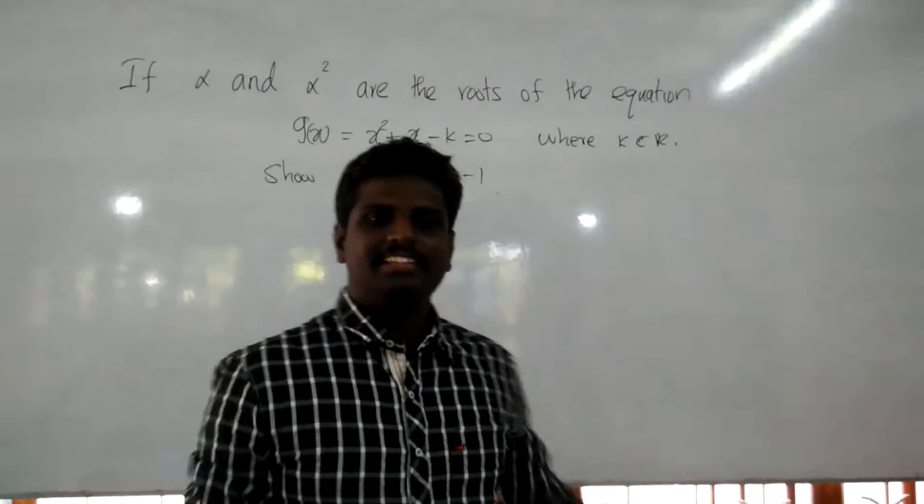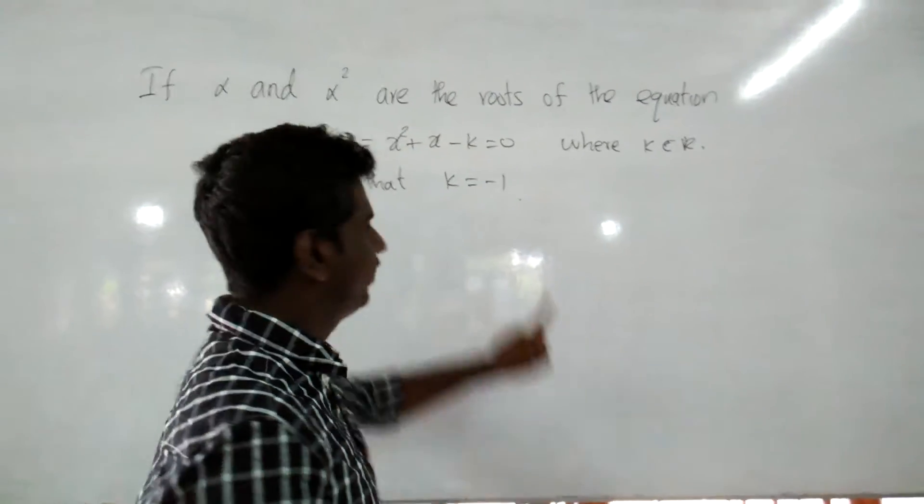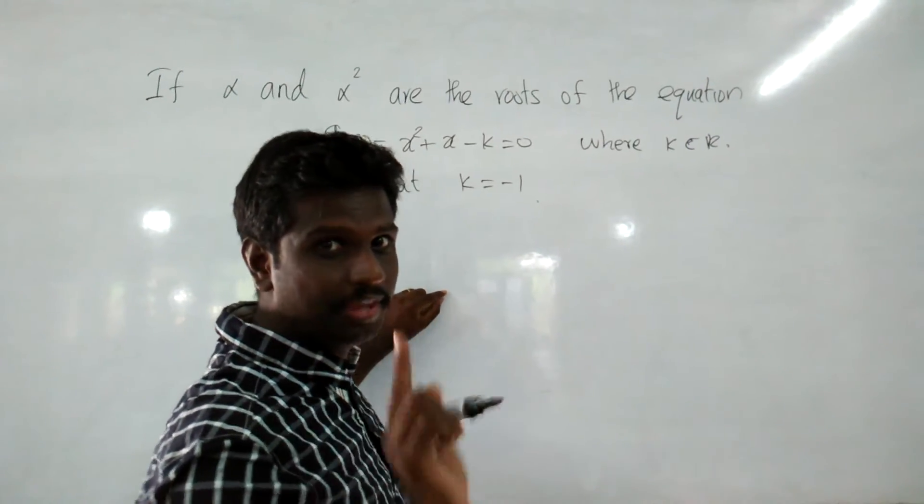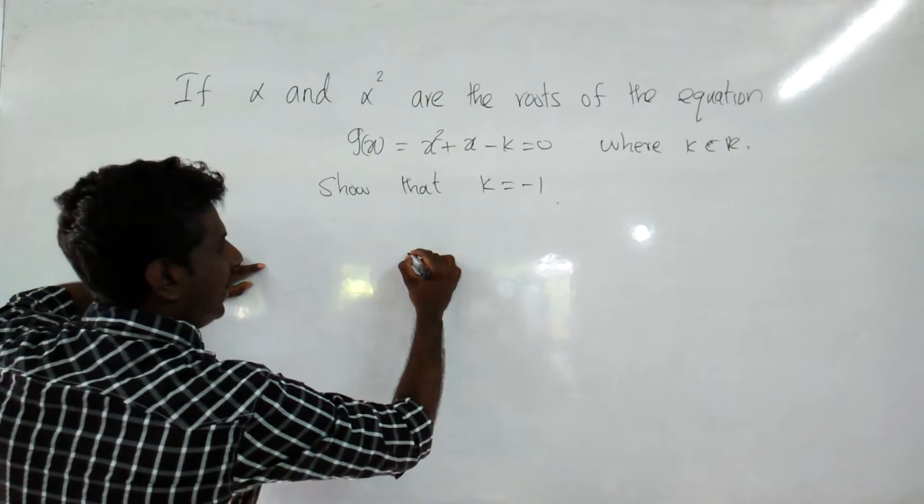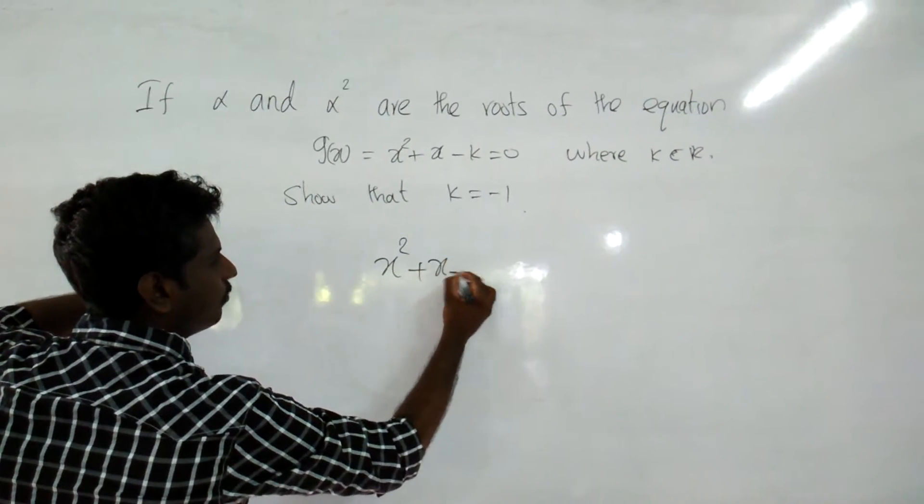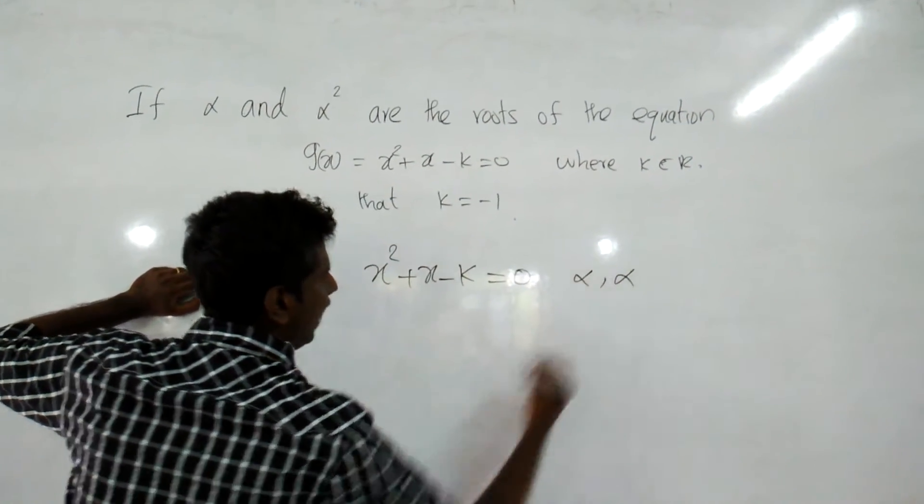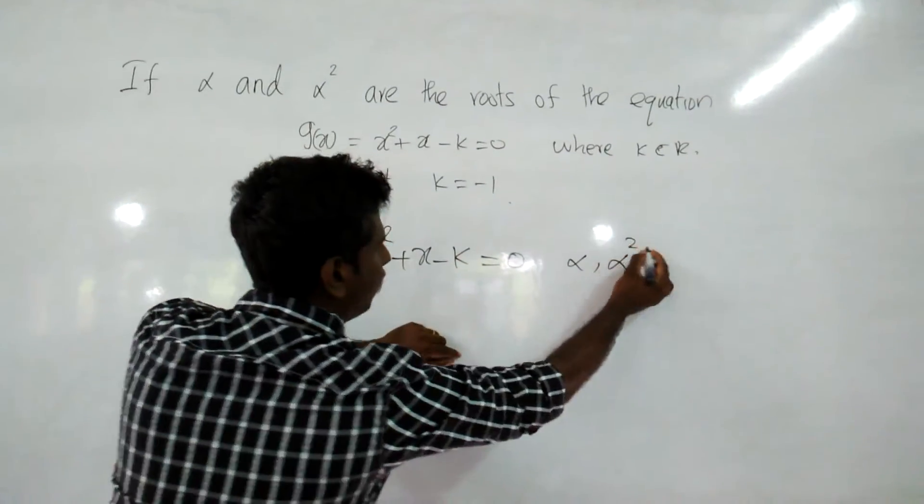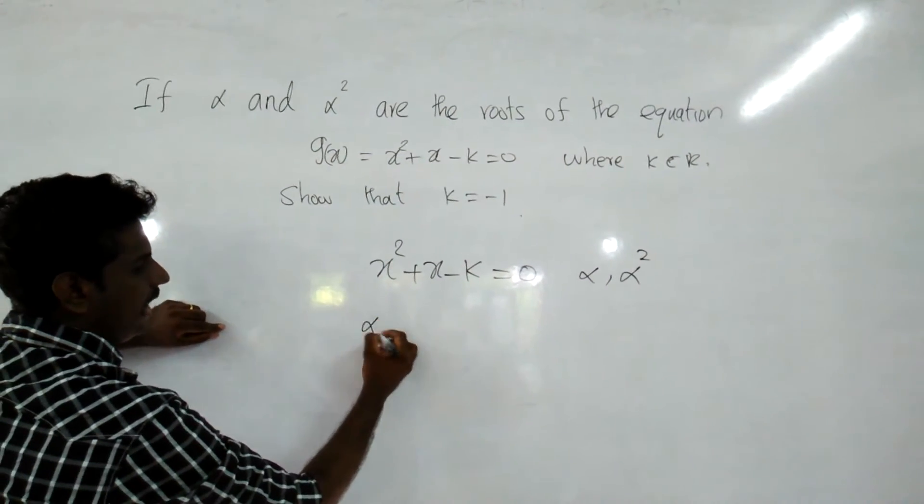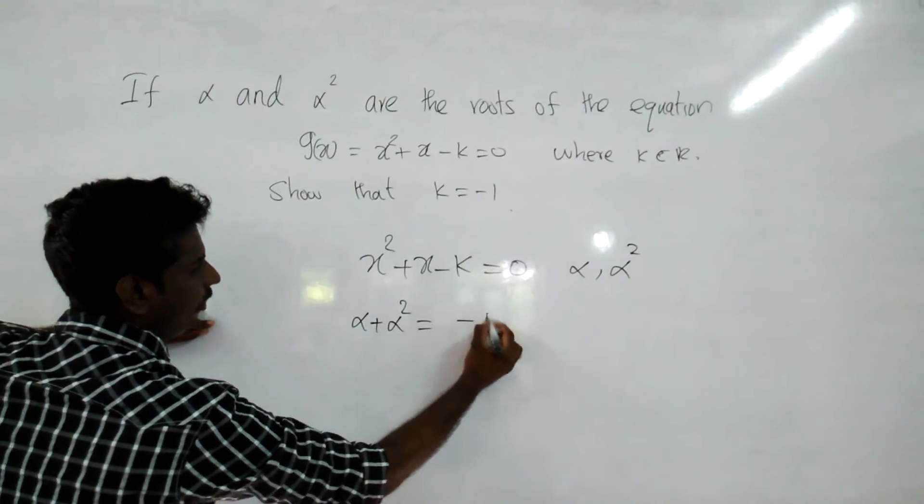This question we are going to do in a very easy method. See, X² + X - K = 0 and roots alpha and alpha square. So you know alpha plus alpha square is equal to minus B over A.